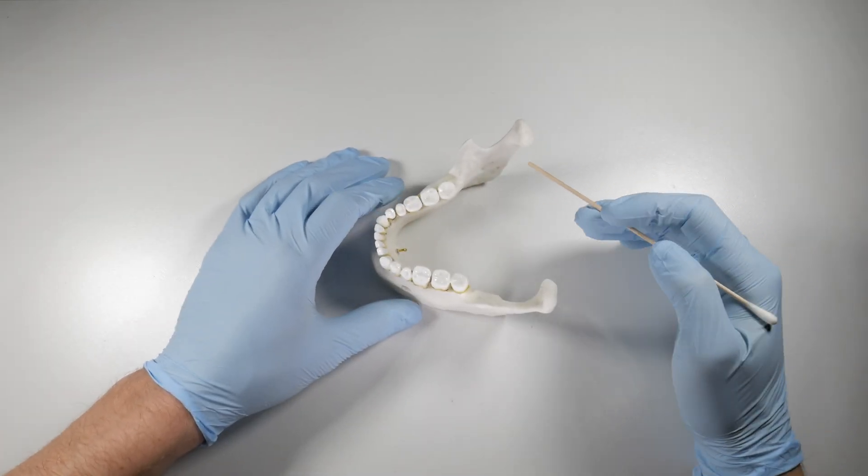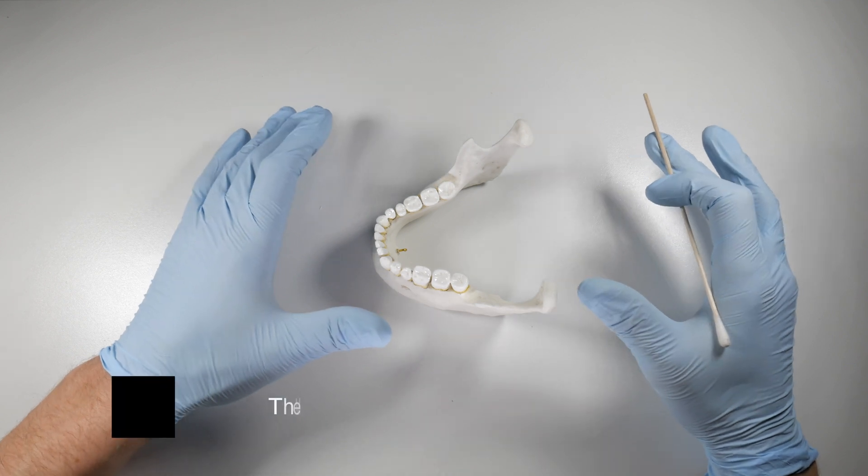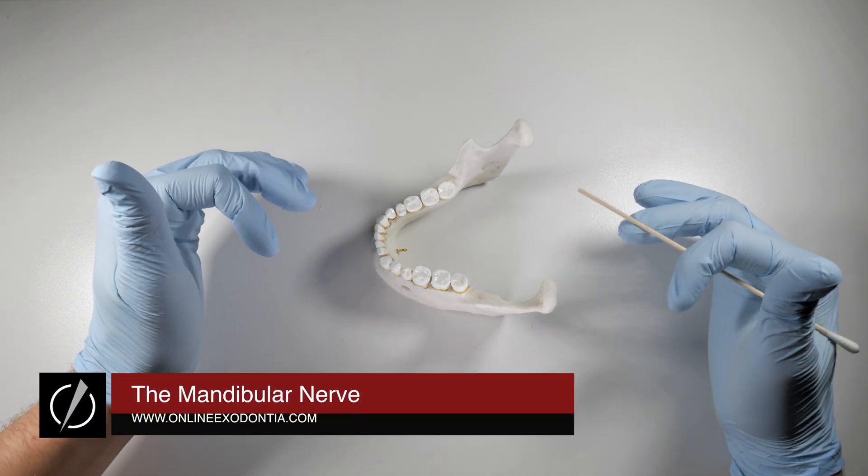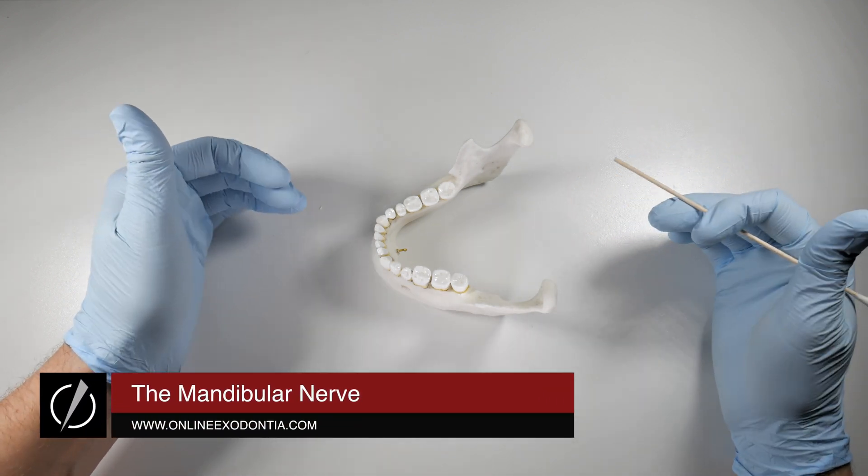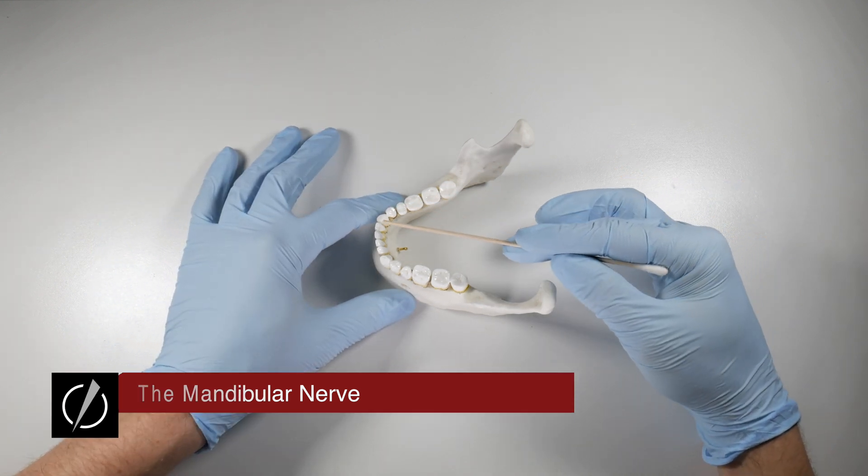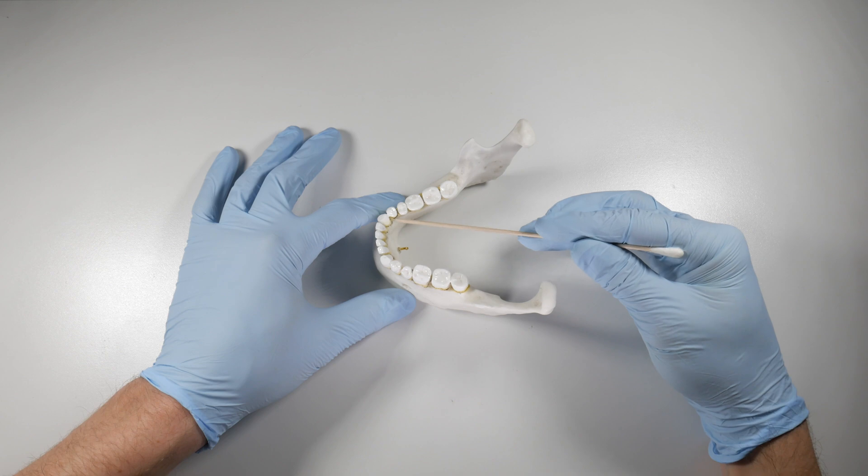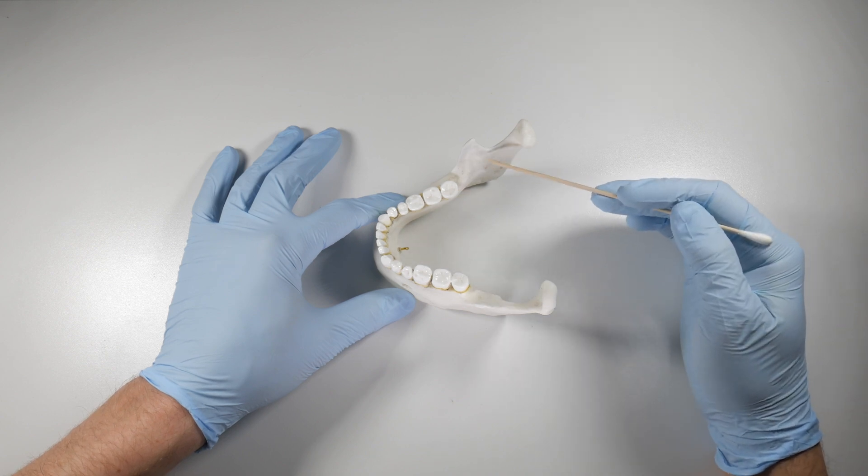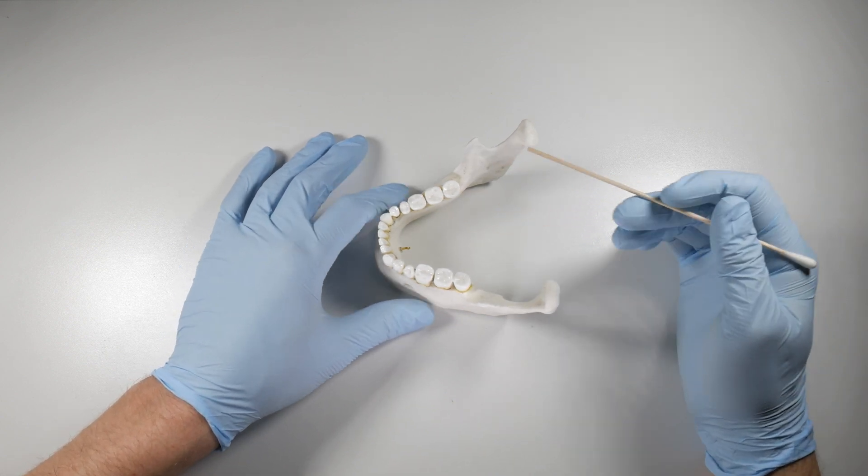The inferior alveolar nerve is one of the most important nerves in dentistry, if not the most important nerve that we deal with regularly in our practices. It's very important that as we move forward in these videos and begin to learn how to extract these mandibular teeth, we have a solid understanding of this nerve and its innervation.